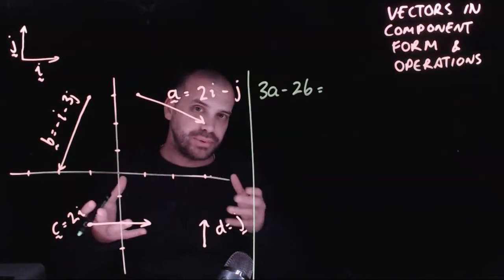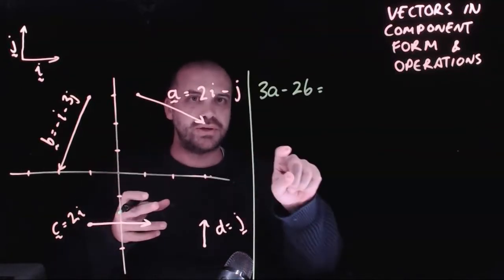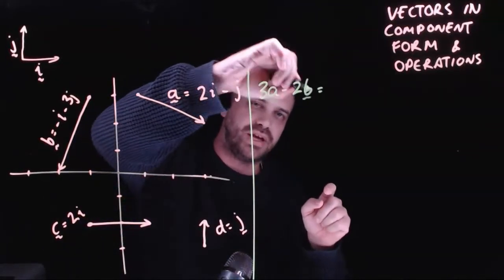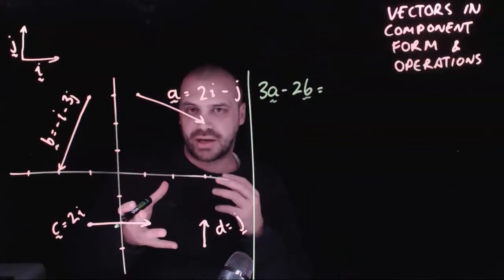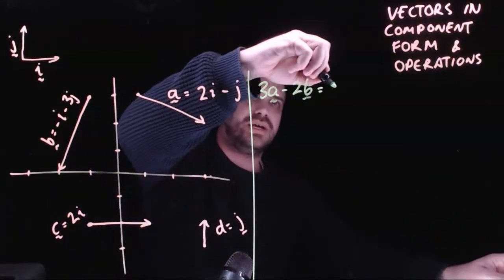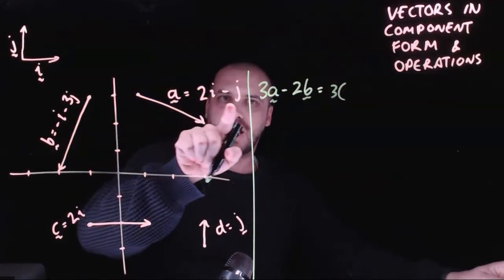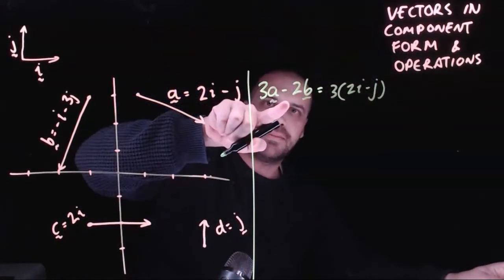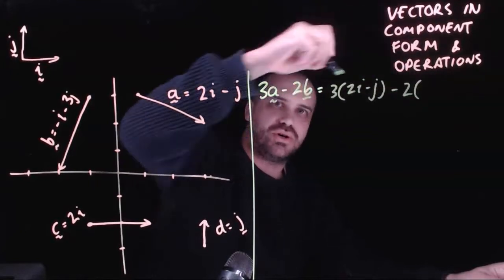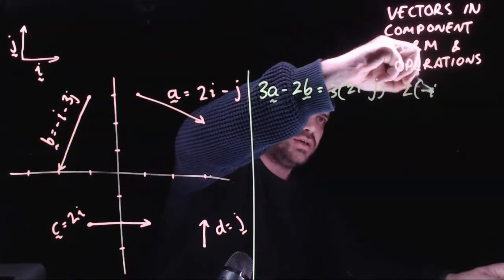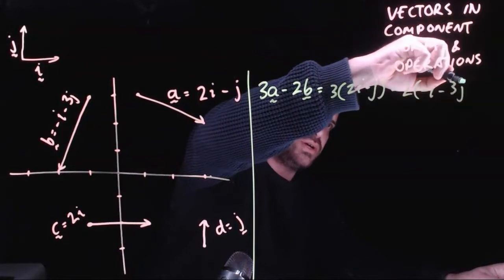This allows us to do some fairly complicated maths with this as well. Because if we wanted to do three times the a vector minus two times the b vector, we can do all of that algebraically. I'm going to do it both ways so you can see it. It's three times the a vector, 2i minus j, minus two times the b vector, negative i minus 3j.